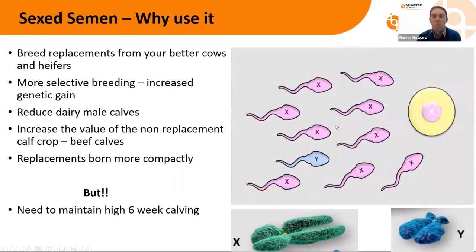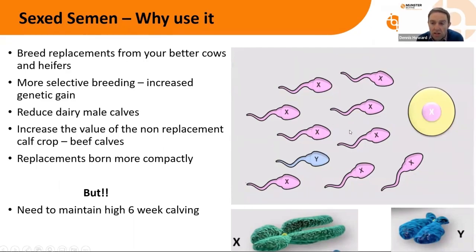The technology behind sex semen is able to sort the semen with 90% accuracy. You can see ten sperm cells here; nine of them are X, so they're going to produce a female calf and you have one Y floating around — that's the 90% purity. You're changing biology, but the odds are a 90% chance that you're going to get a female calf. The X chromosome is slightly bigger and carries 5% more DNA, and that allows the technology to differentiate between the X and the Y chromosome.